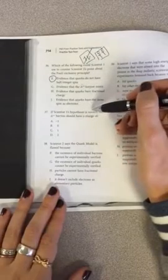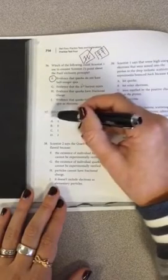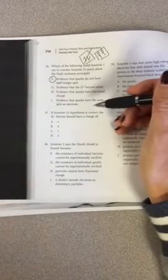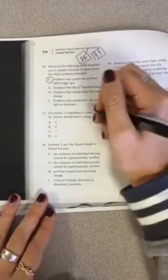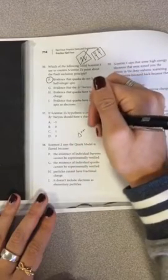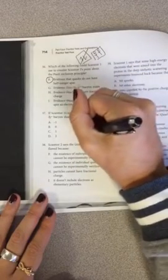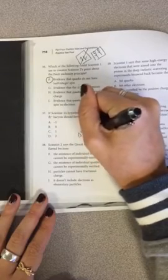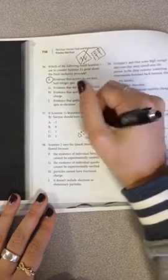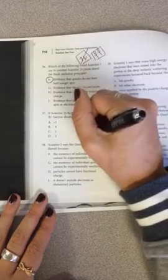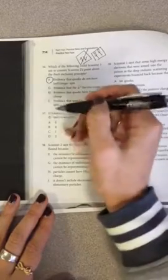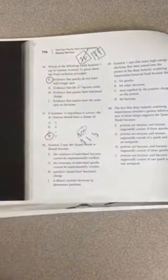Alright, if scientist one's hypothesis is correct, the plus plus baryon should have a charge of. So, scientist two says that this baryon has three quarks. So, each up quark, these two, would have a charge of two-thirds. So the three quarks together, and this is all positive, would have another charge of two-thirds, two-thirds, two-thirds. So that makes it choice D.